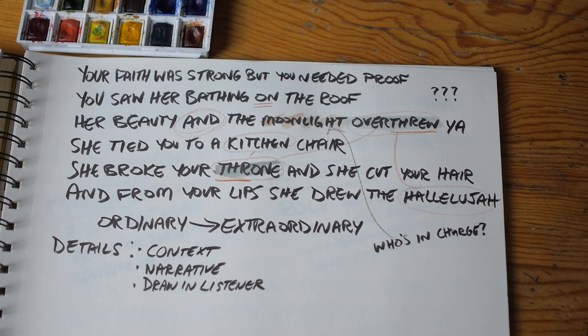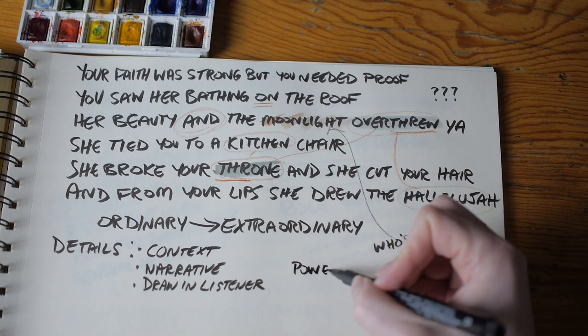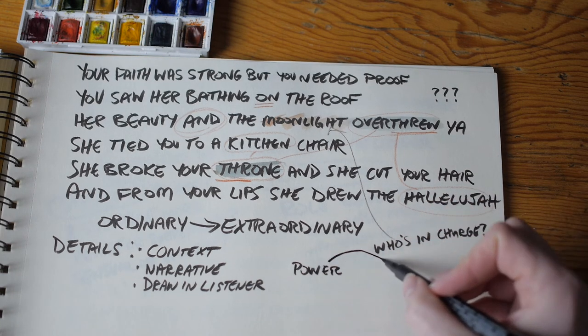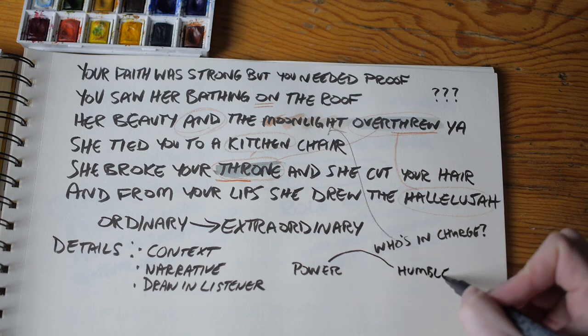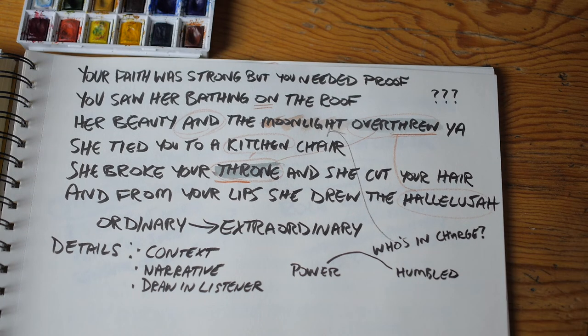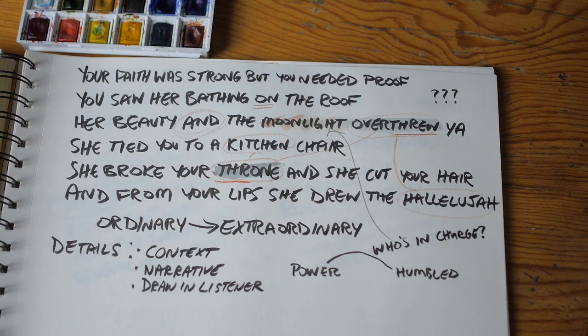This biblical story and Cohen's verse follow the same arc: a man in power subsequently humbled. But David, in spite of everything, would go on to compose hallelujah hymns to the same Lord who struck down his child. In the same vein, our narrator, in spite of past defeats, is singing hallelujah too — more than likely in praise of this godlike lover of his whose scorn he's felt.